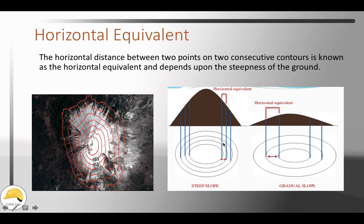These are the contour lines showing the horizontal distance. This represents the ground slope, which depends on the steepness. The contour line shows the vertical distance, while the contour interval relates to the horizontal distance between lines.